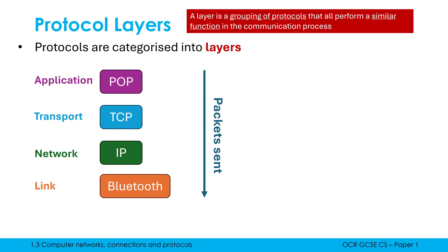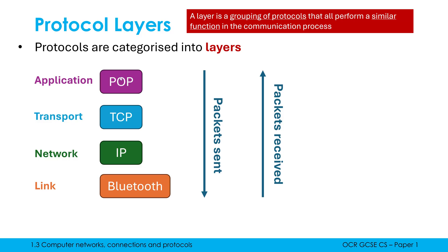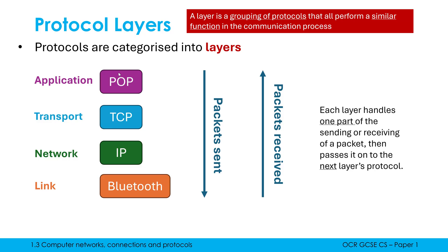The order of the layers is important. When packets are sent, the first protocol to run is the one at the top; it passes the packet to the next protocol, which does some work, then it goes to the next, and the next — working its way down the stack of layers. When packets arrive at the destination, processing starts at the bottom protocol and works its way up until it reaches the top, at which point the packet is fully processed. The layers keep this organized, with each layer handling one part of sending or receiving before passing it on.